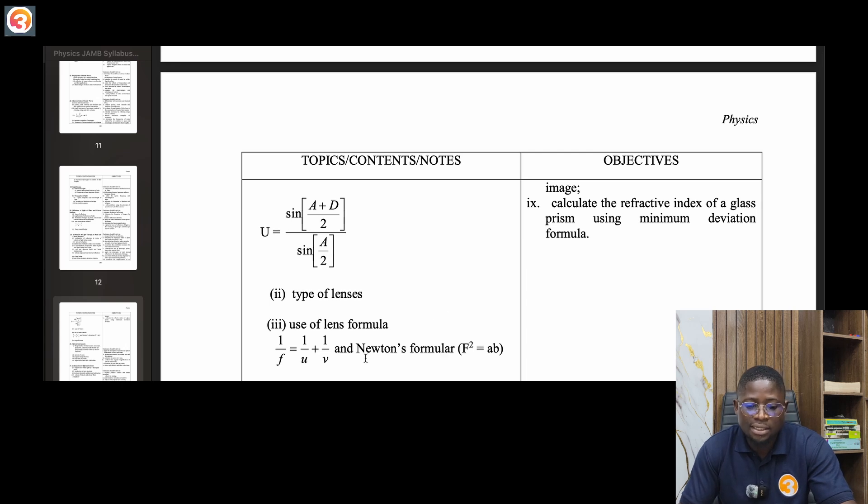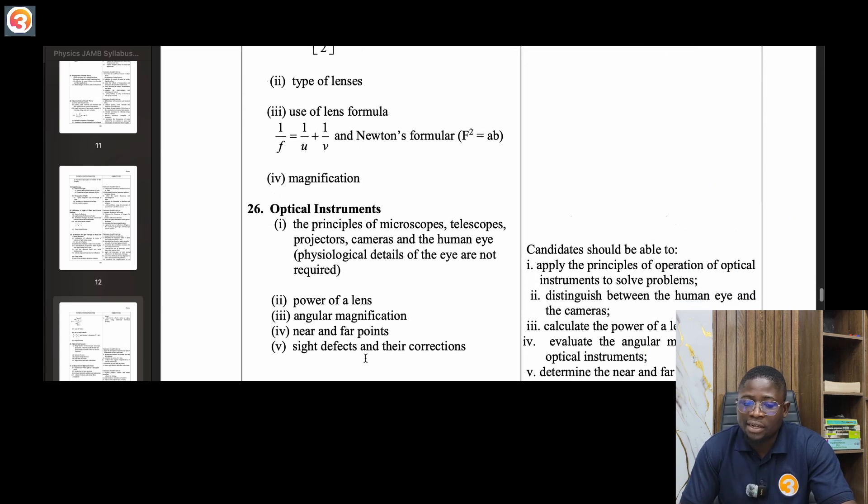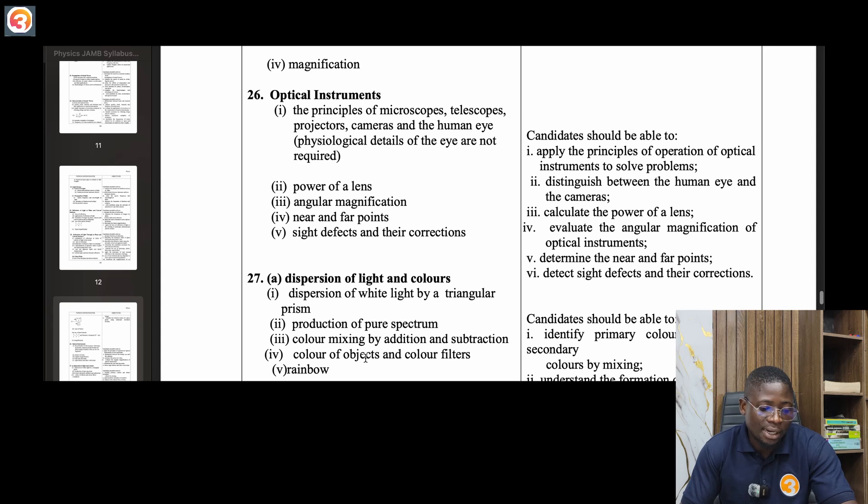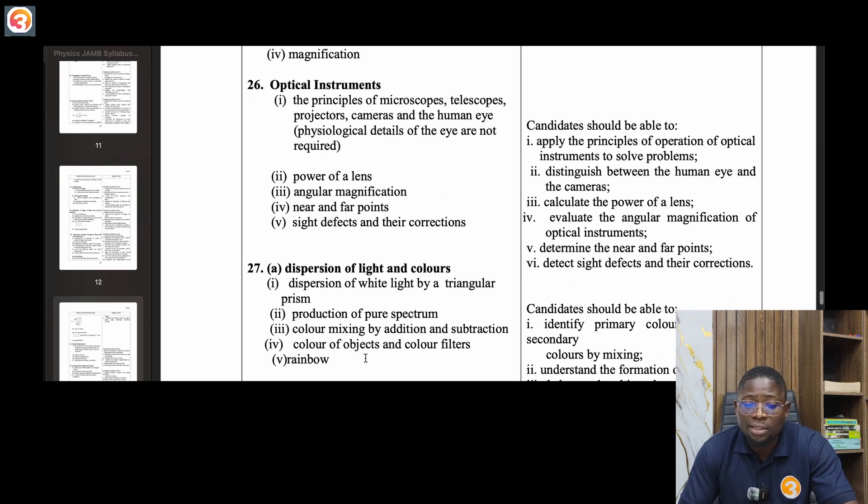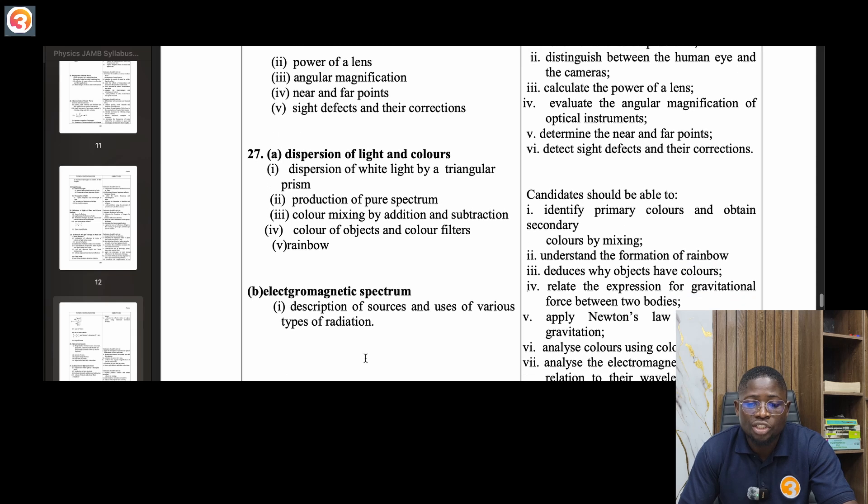Twenty-six, optical instruments. The principles of microscope, telescopes, projectors, cameras and the human eye. Physiological details of the eye are not required. Power of a lens, angular magnification, near and far point, sight defects and their corrections.